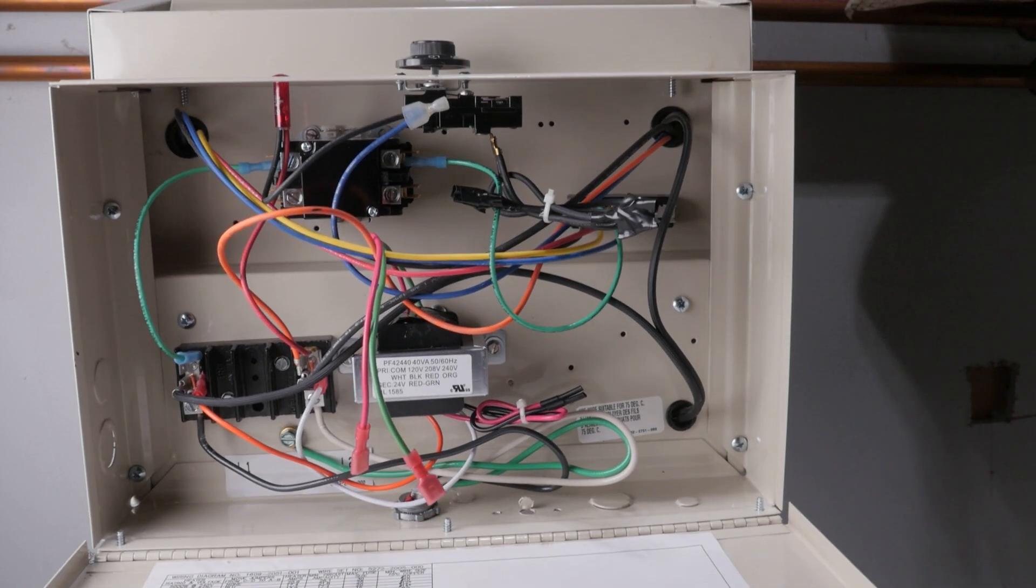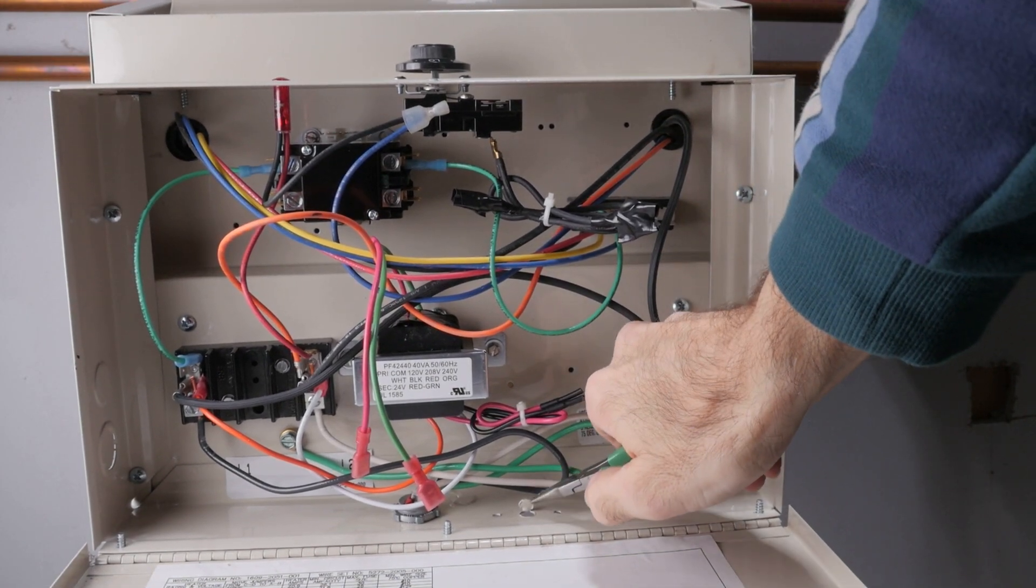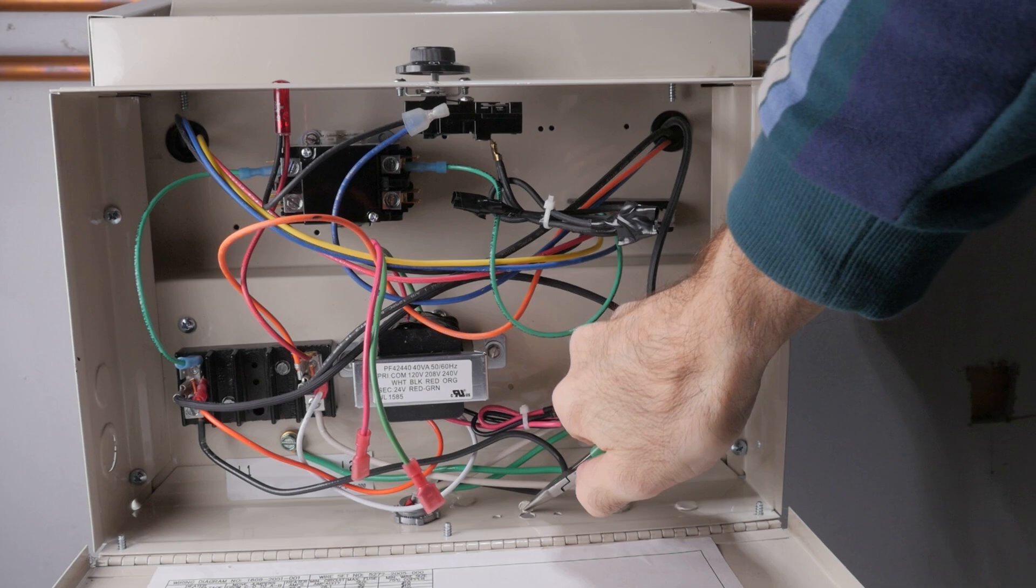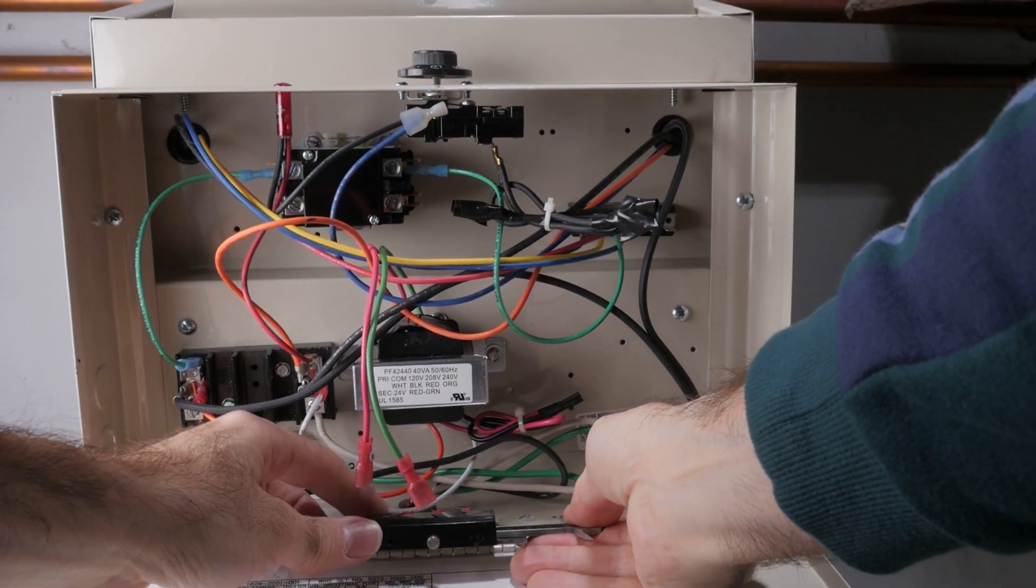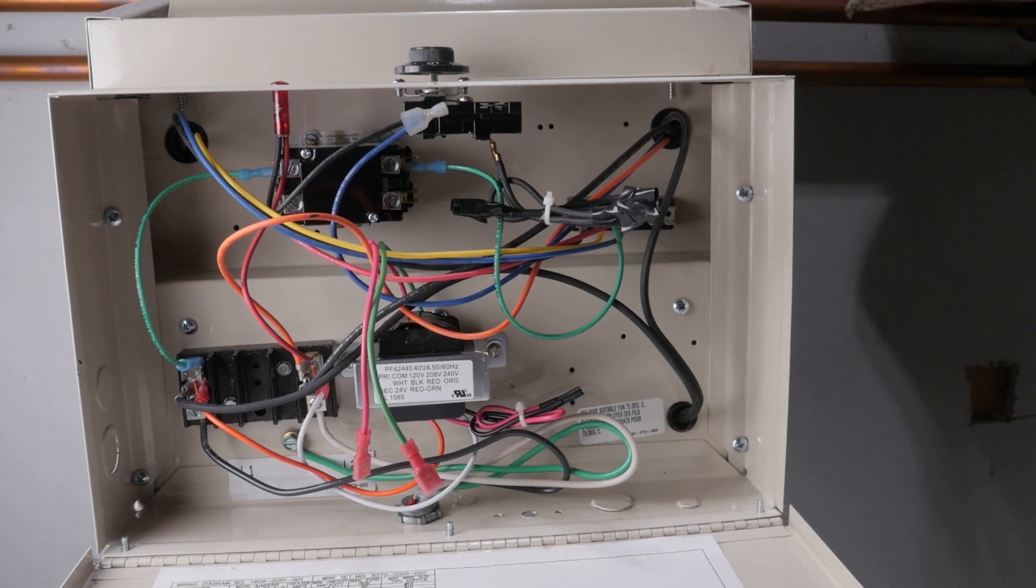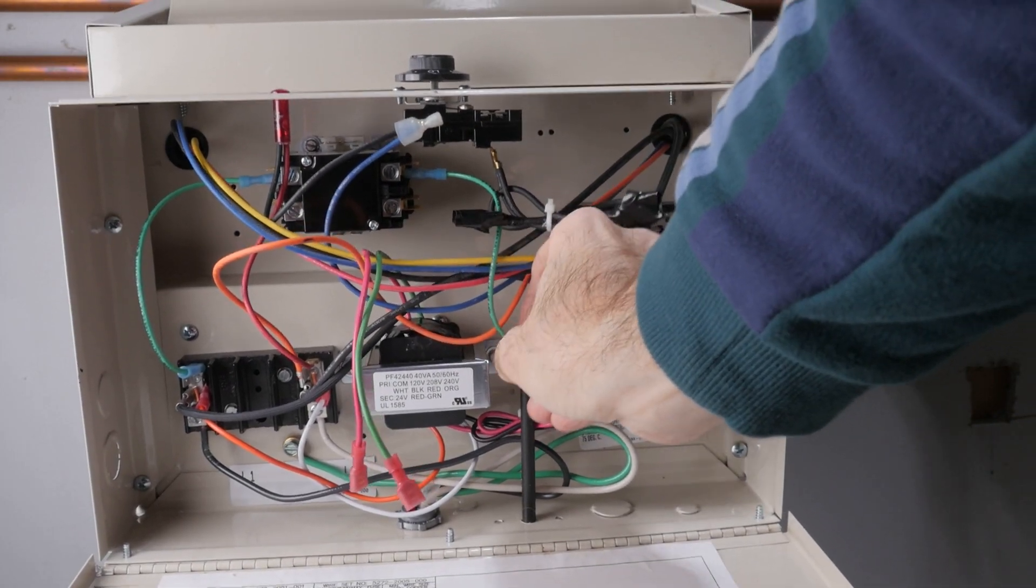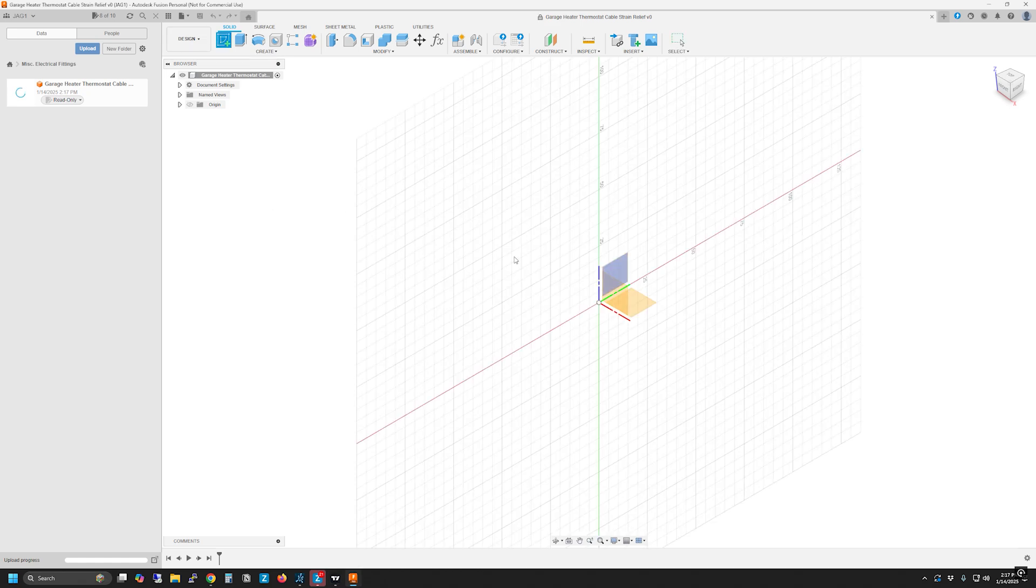I knocked out a punch-out in the case to allow for the new thermostat control wire to enter the case. I didn't have any strain reliefs or cable guides lying around and because the unit vibrates while running, I was concerned about the wire chafing. So I measured up the holes, jumped into fusion, made a little cable guide and sent it off to the 3D printer.